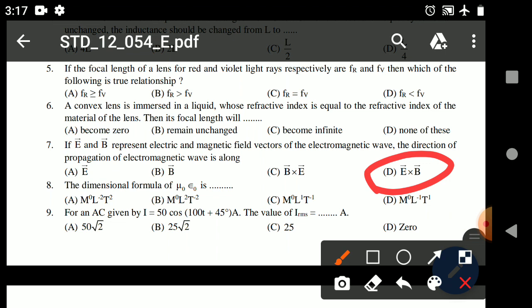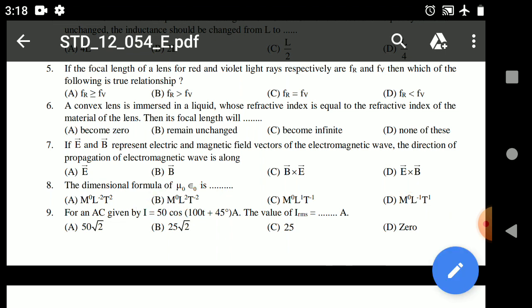Question 8: The dimensional formula, answer is B. For an AC given by i equals 40 cos(100t + 45 degrees), the value of irms is equal to? Answer is 25 root 2A.